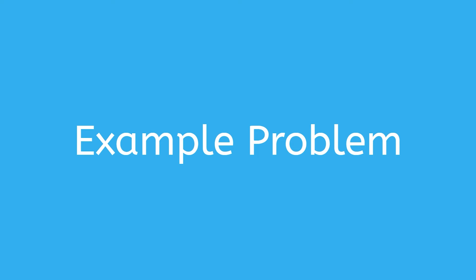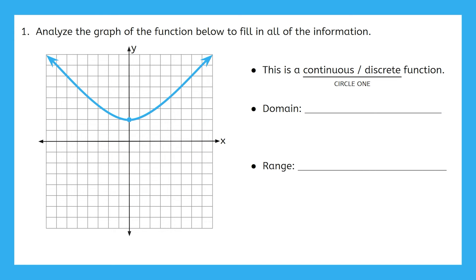Let's take everything we've learned so far about analyzing functions and apply it to two example problems. This example problem is asking you to analyze the function to determine whether it is continuous or discrete and to define the domain and range. Pause the video now and try this in your PDF. Then come back here to see how you did.